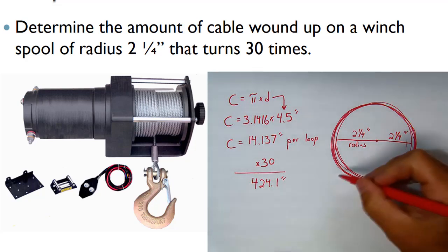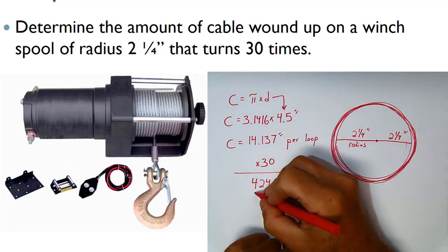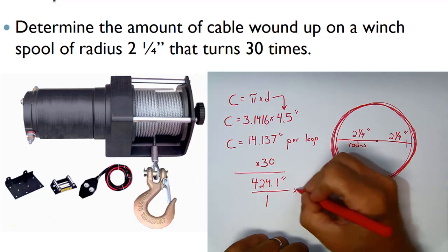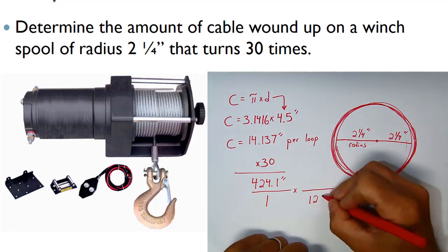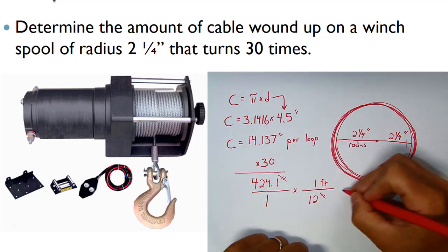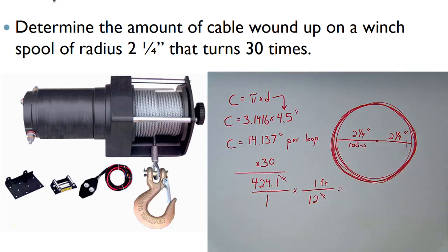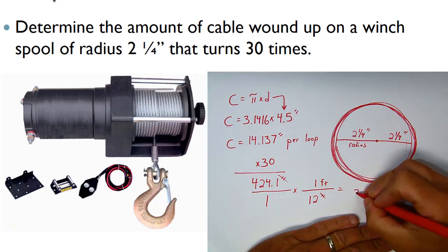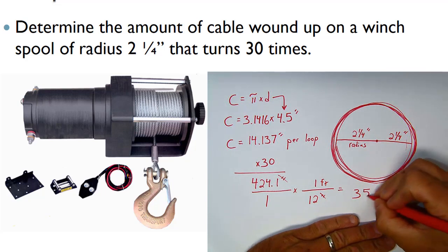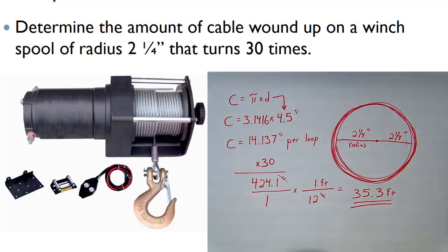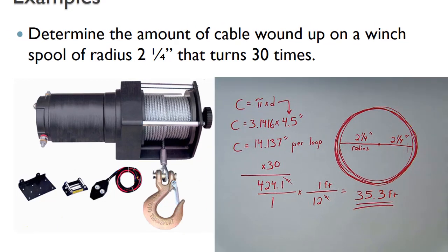It'd be useful to know how many feet that is. A little review of unit conversion: we put that over one and trade in twelve inches for every foot so our units cancel off. We take 424.1 and divide it by twelve, which leaves us with thirty-five point three feet. So about thirty-five feet of cable on that winch, and we've answered the question.